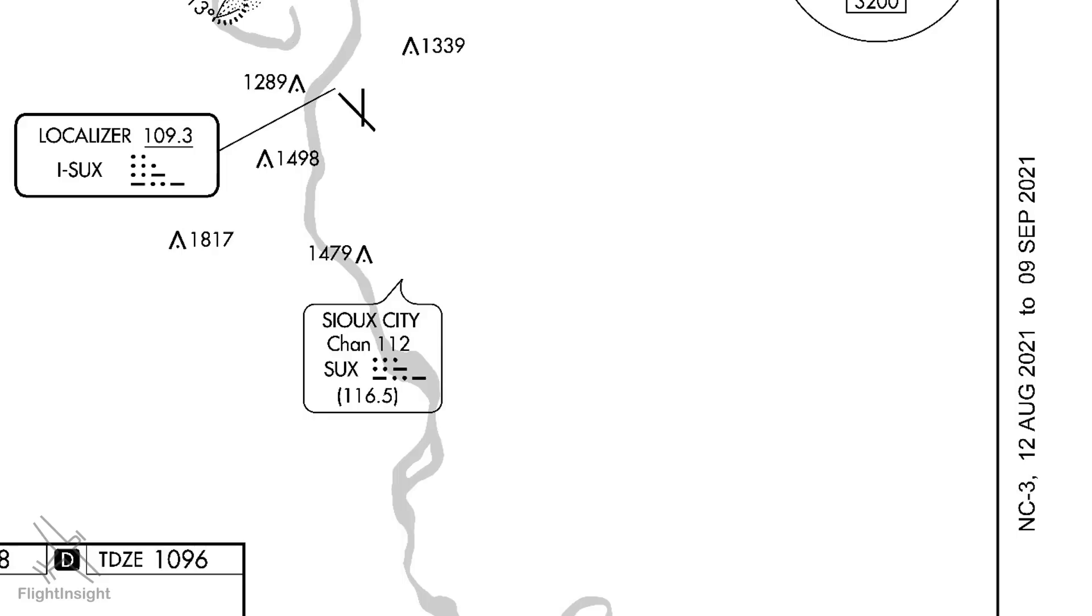Unlike a VOR approach, which is transmitted omnidirectionally all the way around, the ILS signal is focused along the extended runway centerline. Within 10 miles of the localizer antenna, the signal is only receivable in an arc offset 35 degrees to either side of the centerline.